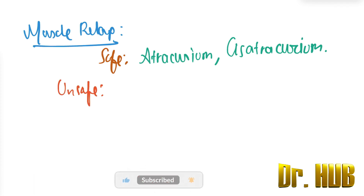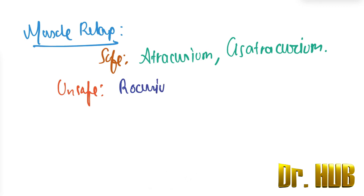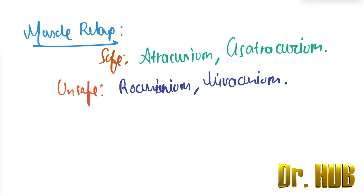The unsafe muscle relaxants include rocuronium, vecuronium, and mivacurium. So this was all about anesthetic drugs in patients with reduced renal function. We covered inhaled anesthetics, IV anesthetics, opioids, and muscle relaxants, categorized as safe and unsafe. Please subscribe to learn and grow daily.